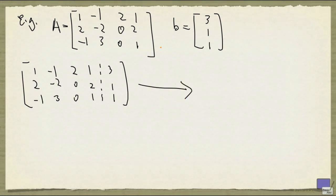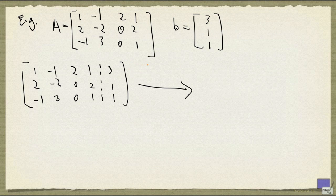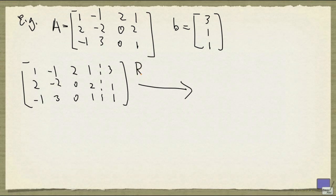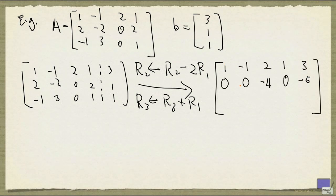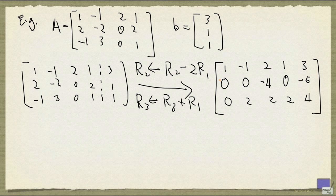Remember that we want to bring the matrix consisting of the first columns to reduced row echelon form. And towards that goal, we're going to do the following. We'll take minus 2 times first row and add it to the second row. And that will make the first entry in the second row 0. And we'll add row 1 to row 3 to do the same. So this is 2 times row 1. And the result is this.